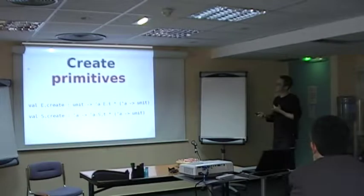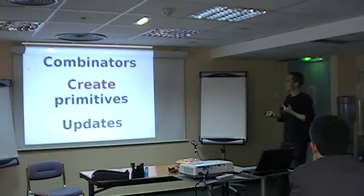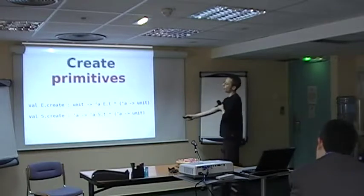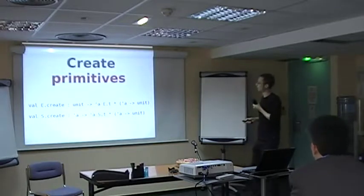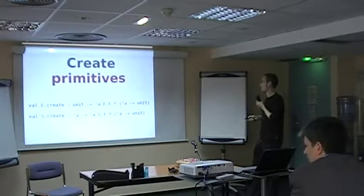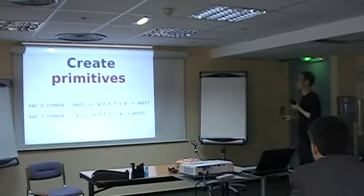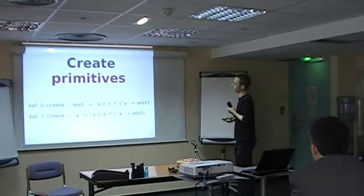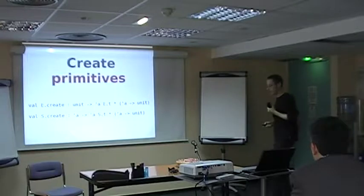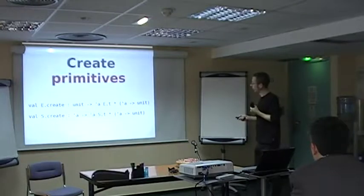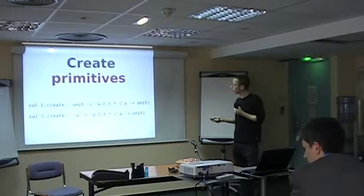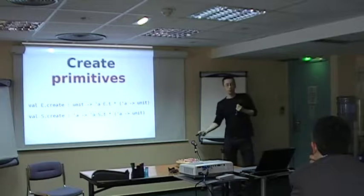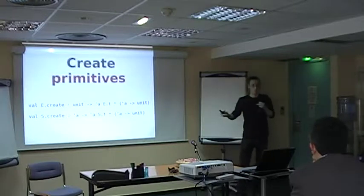And React gives you these two functions here to create primitives. So, e.create creates an event here, and it returns you also a function here. And whenever you call this function, then it generates an occurrence on this event. And in this call to the function here, everything will update, all the dependents on this event will update in the reactive system. And whenever the call returns, the system will be up to date.